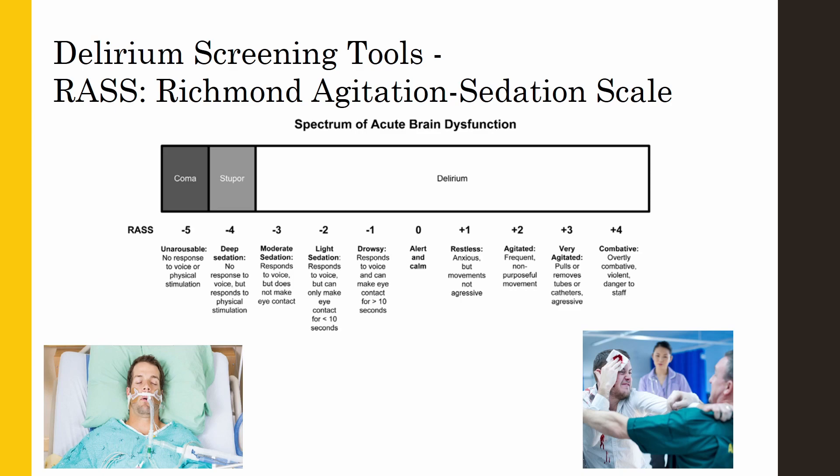A delirious patient may also look like the individual on the right. Restless and agitated patients are on the higher end of the scale. Patients who are combative and need to be restrained because they are in danger to staff would be at a positive 4 on the RASS. If a patient is determined to be anywhere other than zero on the scale, the DTS would be considered positive. This patient would then be further assessed by a physician to confirm delirium using the BCAM.